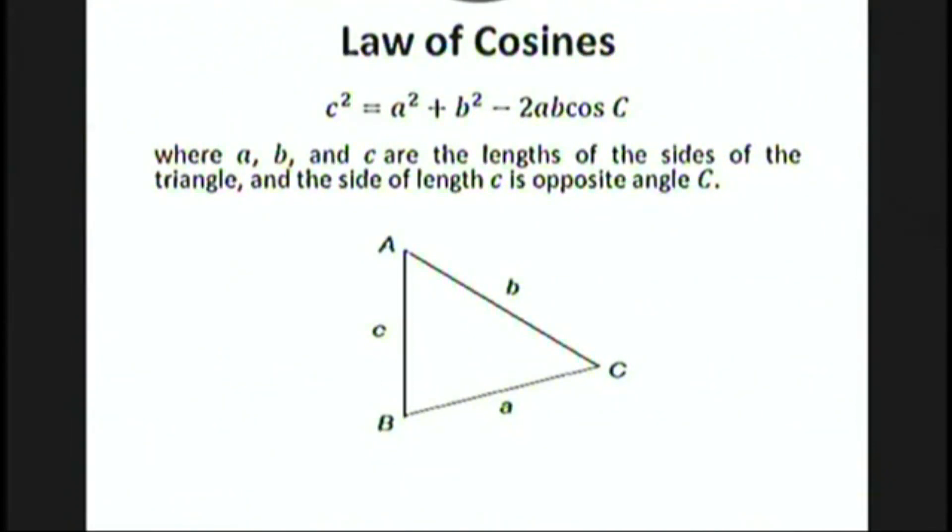Next let's talk about the law of cosines. The law of cosines says c² = a² + b² - 2ab cos C, where little a, b, and c are the lengths of the sides of the triangle, and the side of length c is opposite angle big C. Notice that this side that's by itself has to be opposite the angle being used in the formula. Also notice that the first part, c² = a² + b², is just the Pythagorean theorem. In fact, if C is a 90-degree angle, then the last part equals zero.